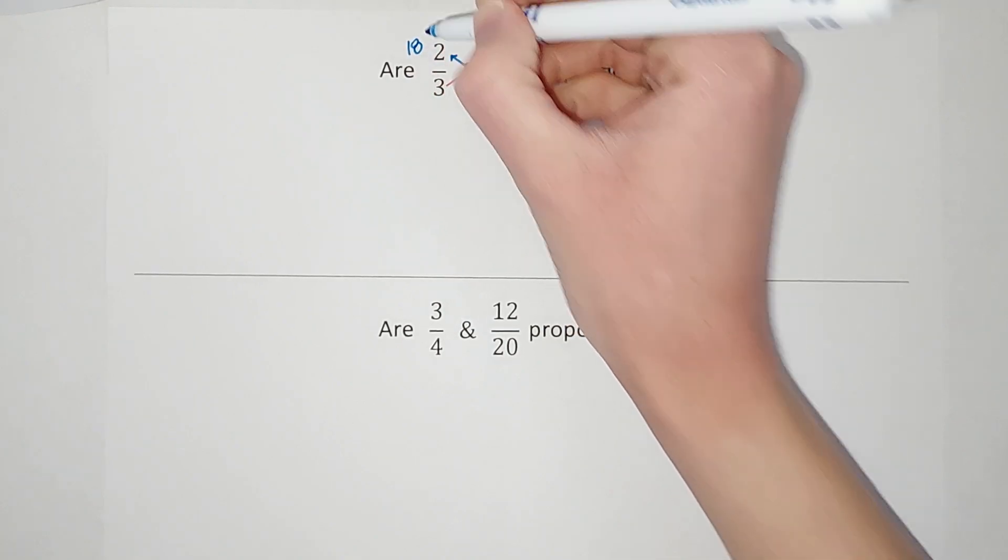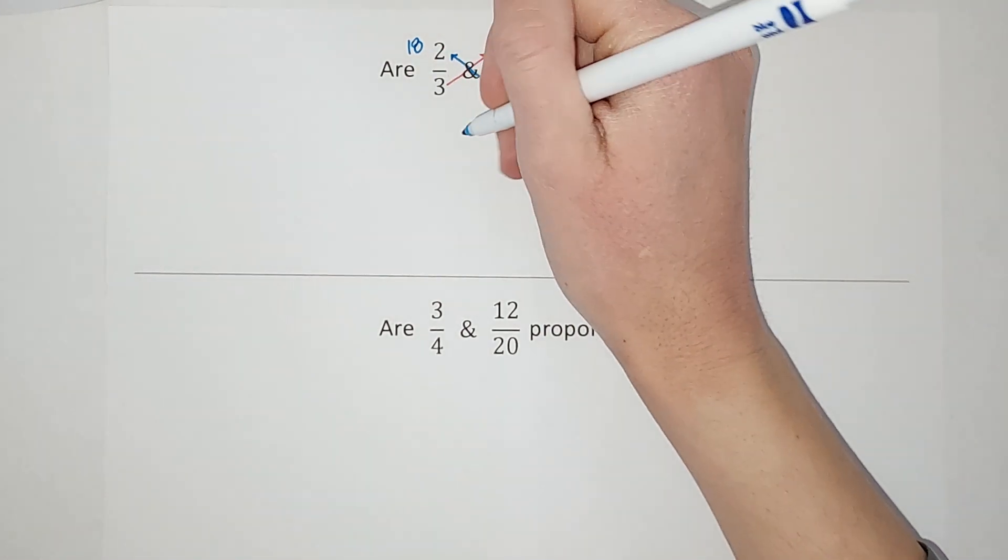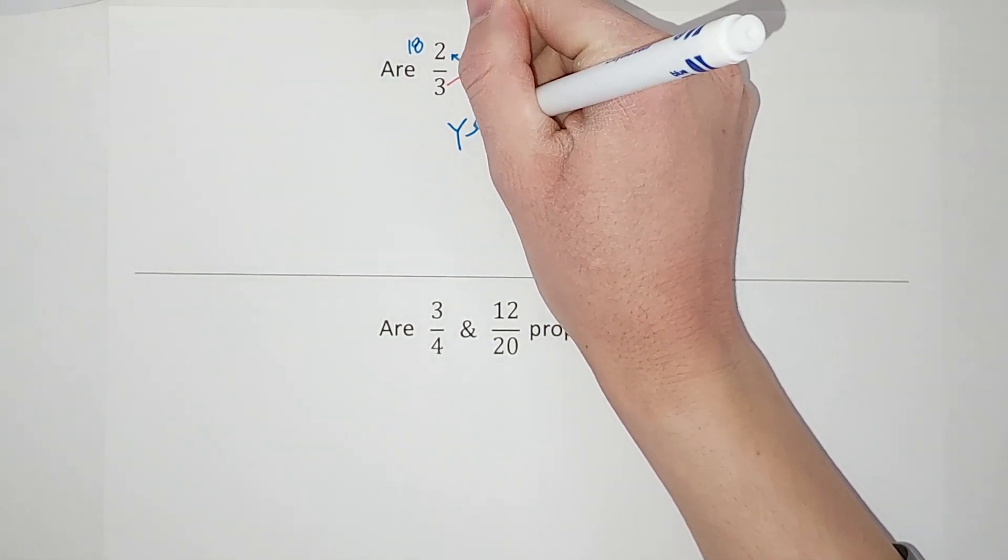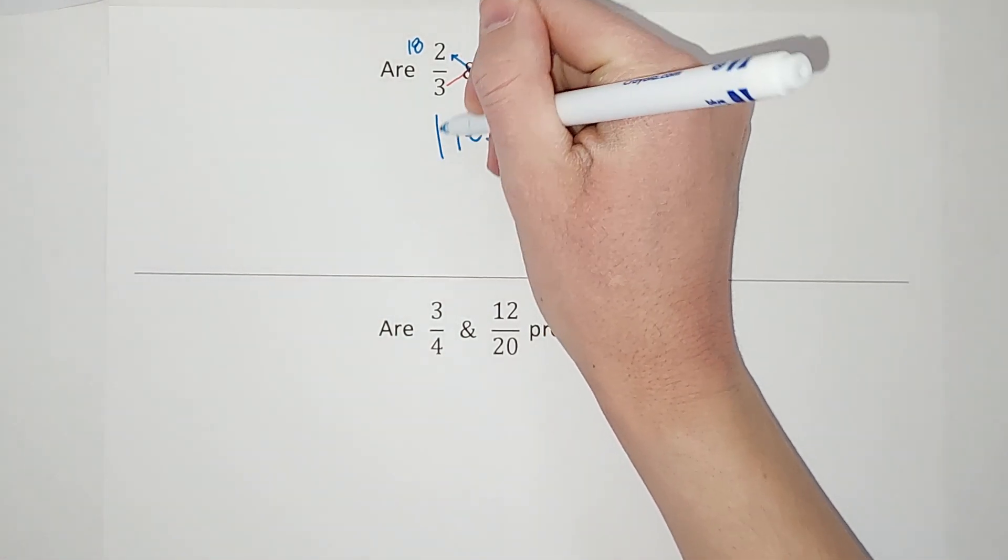If those numbers are the same, which in this case they are, yes, two-thirds and six-ninths are proportional to each other.